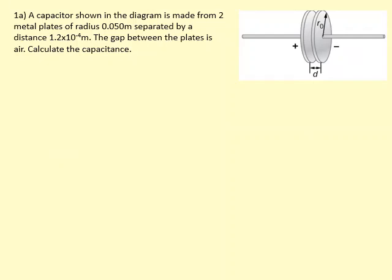A capacitor is shown in a diagram made from two plates of radius 0.05 metres, separated by a distance of 1.2 × 10⁻⁴ metres. The gap between the plates is air. To calculate the capacitance, we use C = ε₀εᵣA / d. Because there's air, εᵣ equals one, so we can ignore it.